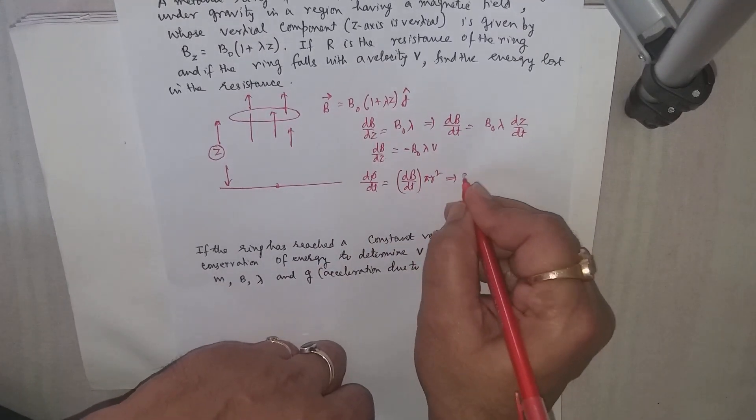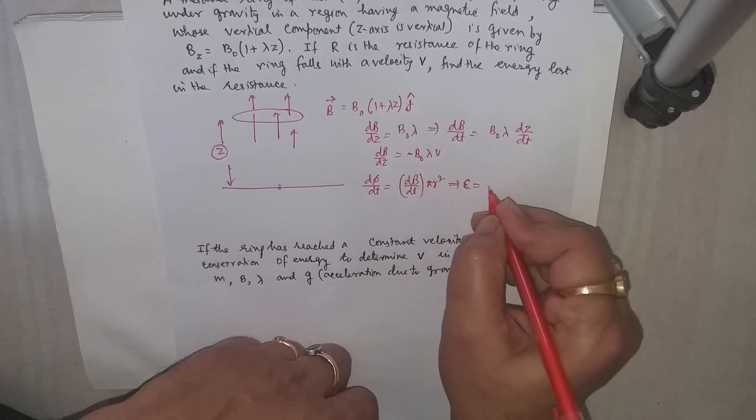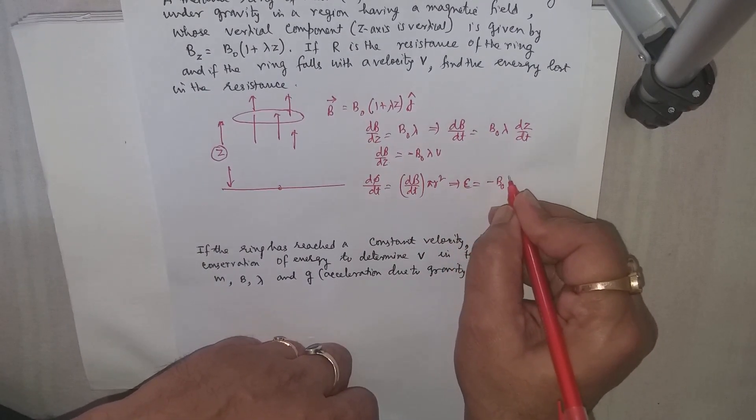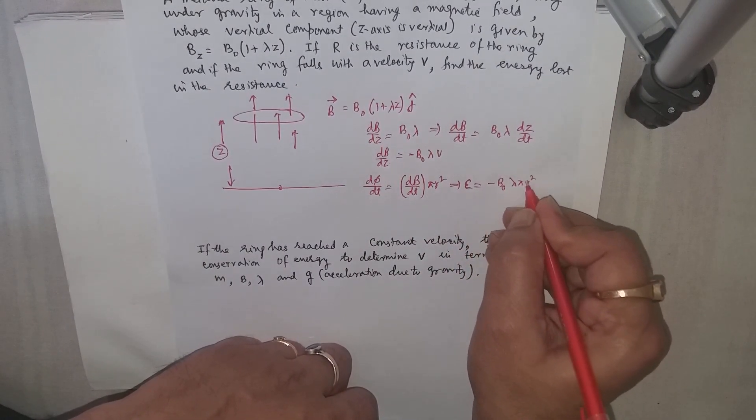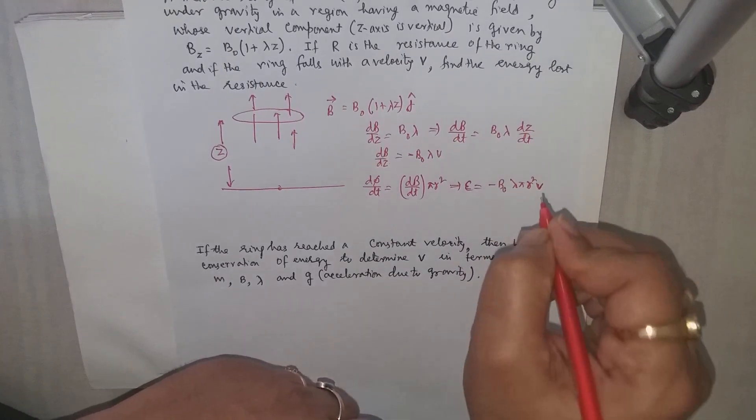And this will be EMF induced. EMF induced will be equal to minus B₀λπr²v, where v is the instantaneous velocity.